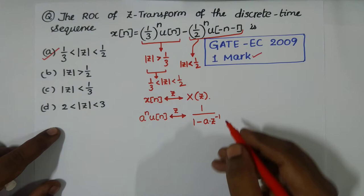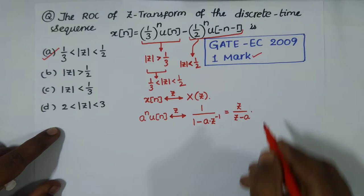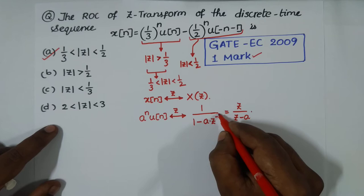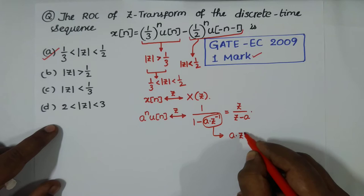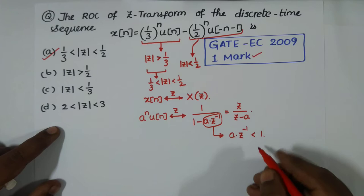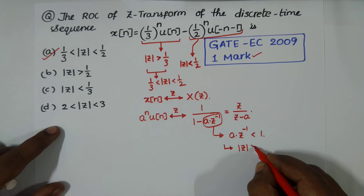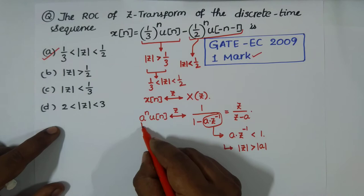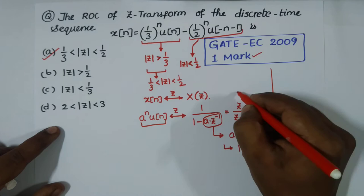Its Z-transform is 1 / (1 - a·z^(-1}), or equivalently z / (z - a). Both forms are the same. This will converge whenever |a·z^(-1)| < 1, which means |z| > |a|. So for a causal sequence, the ROC is always exterior.